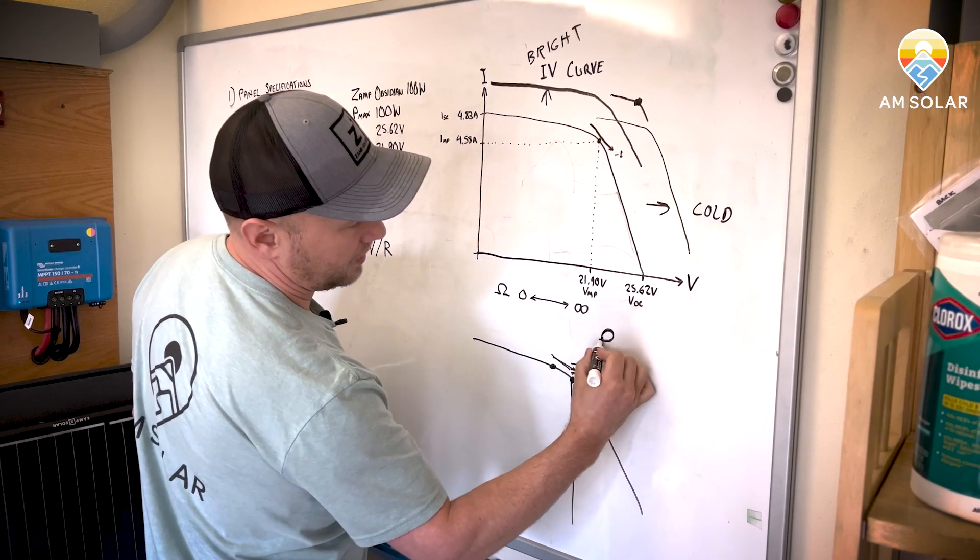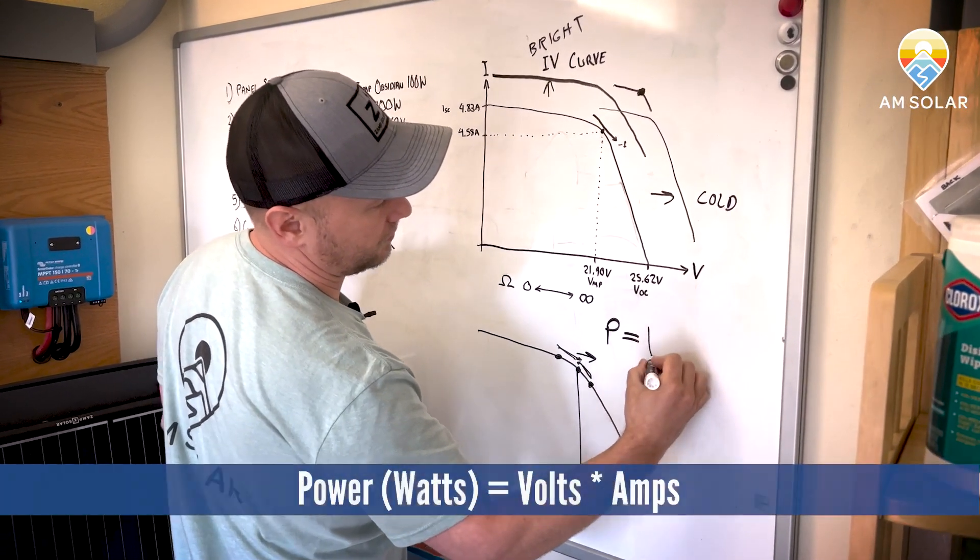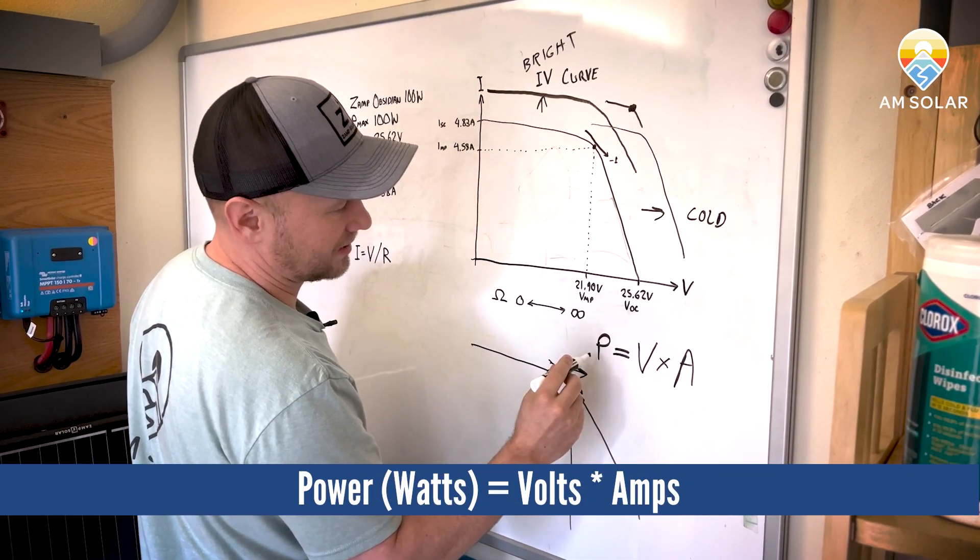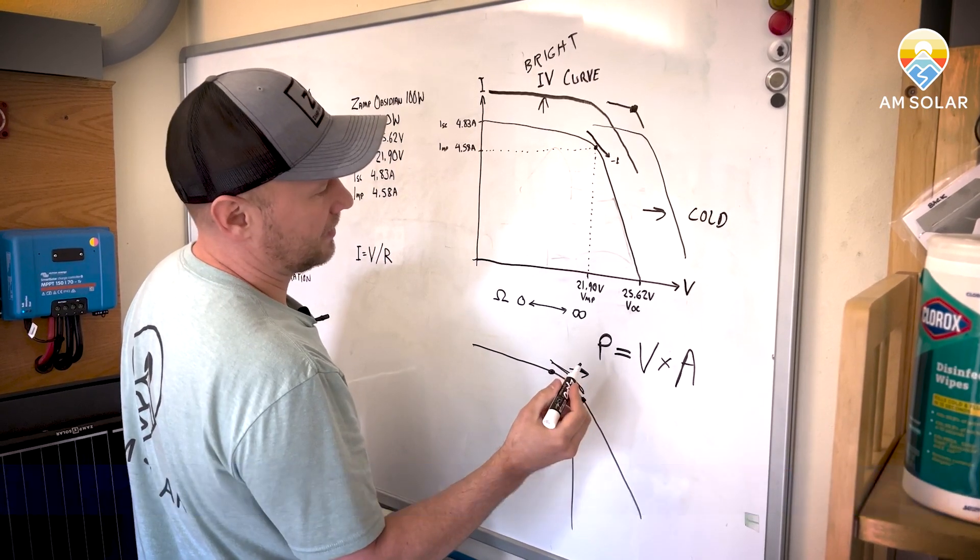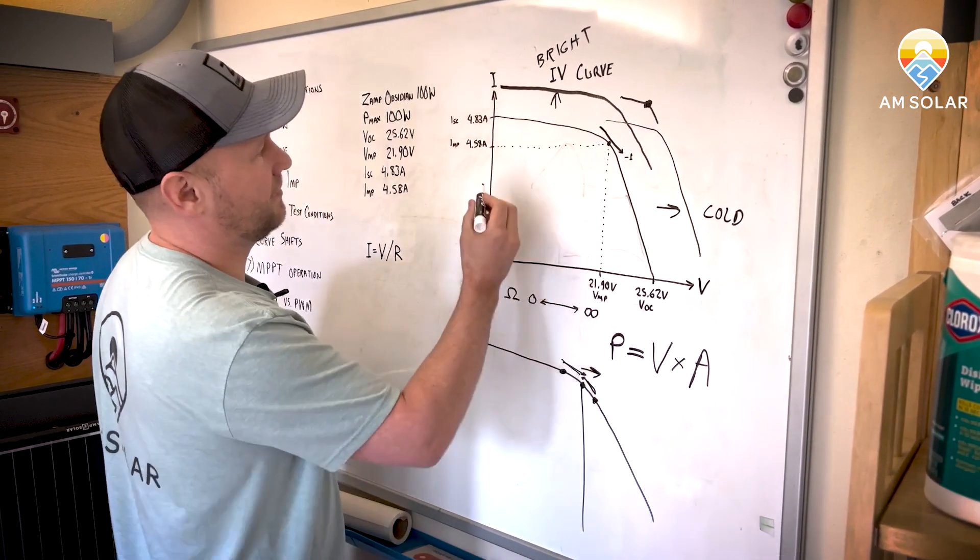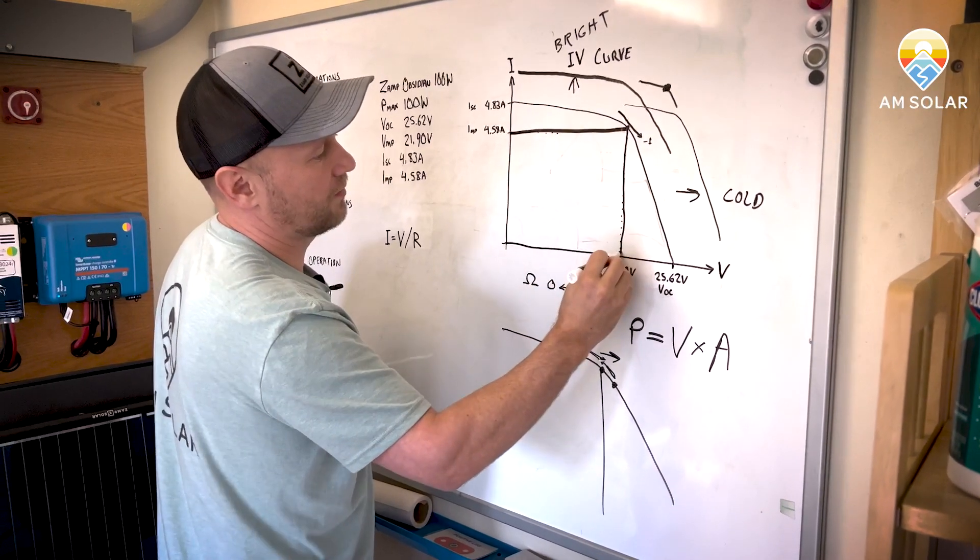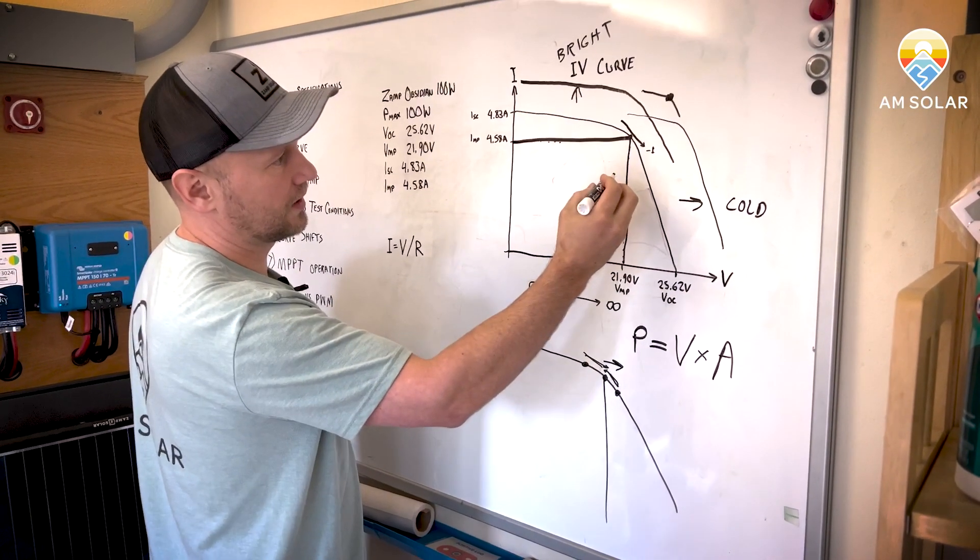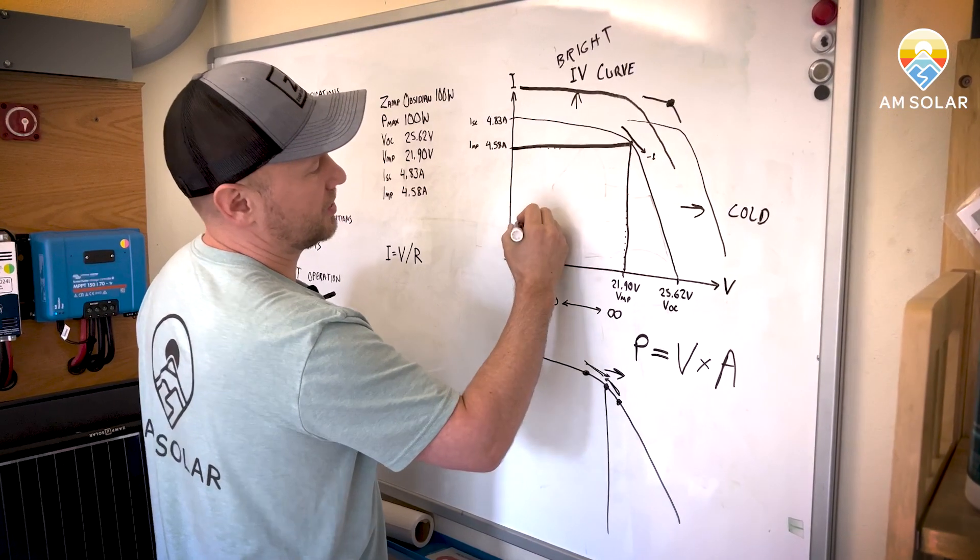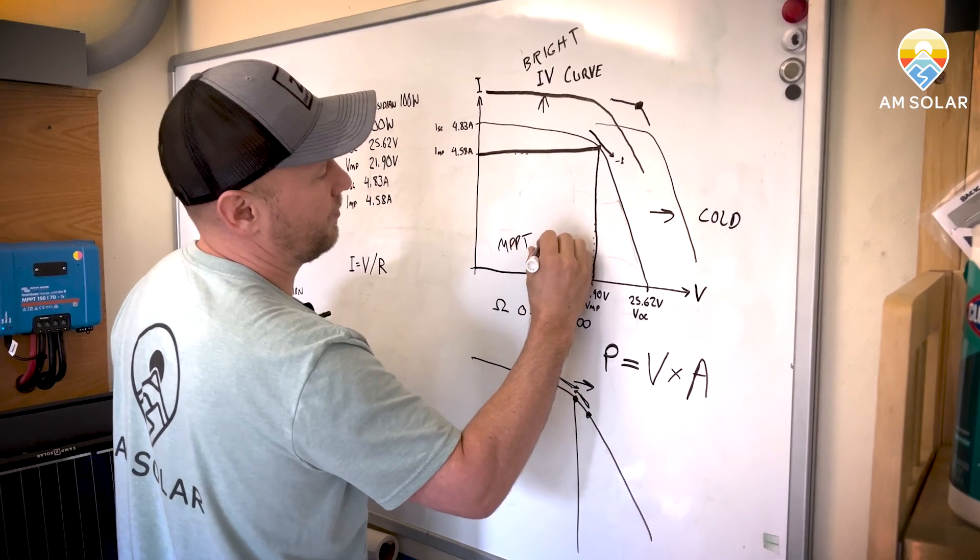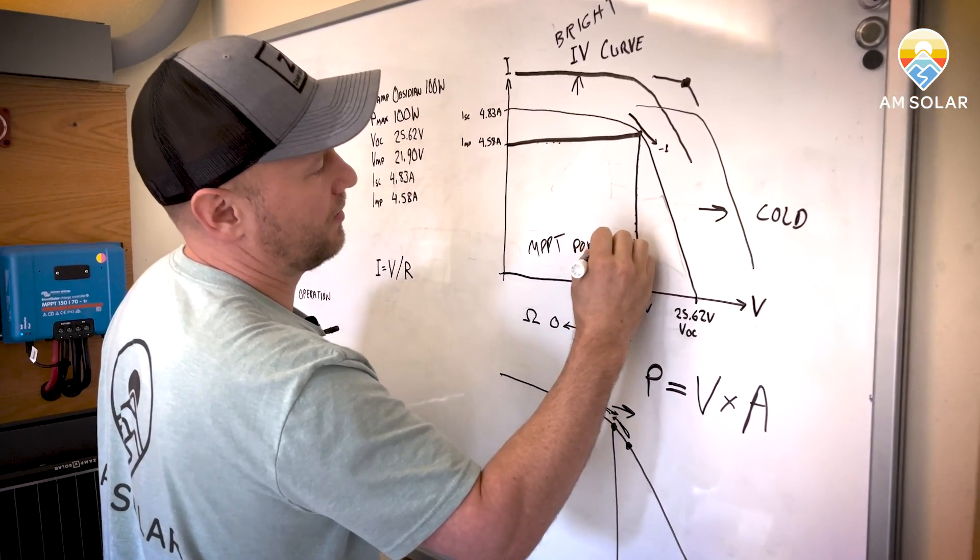Power equals volts times amps. And you want to maximize that power. And to determine the power on an IV curve, it's basically the area of this box when you're using a MPPT charge controller. So we'll call this MPPT power, the area of that box.